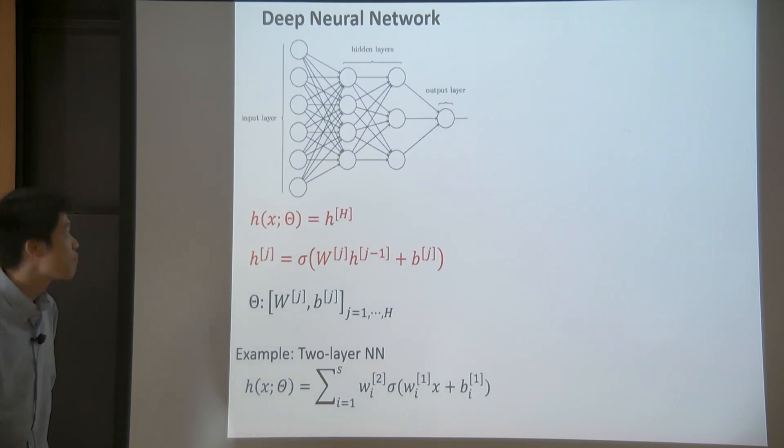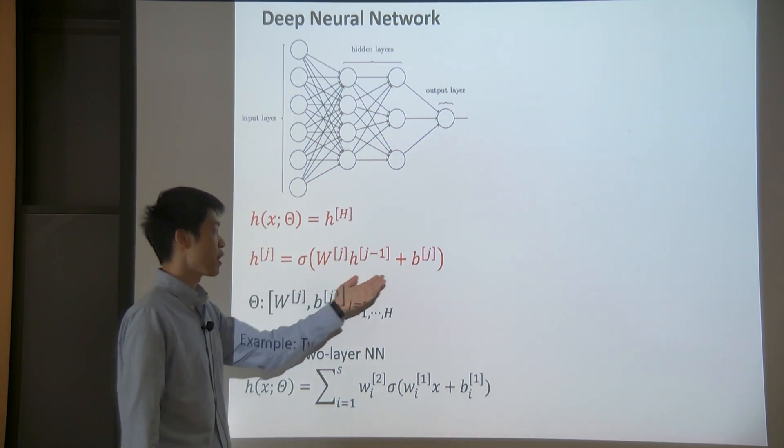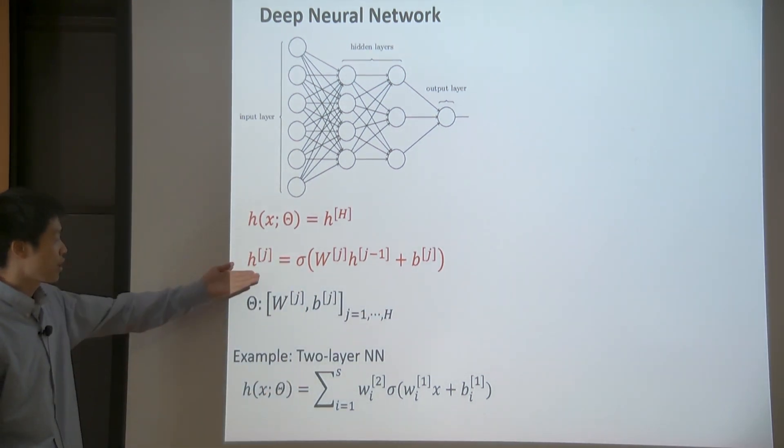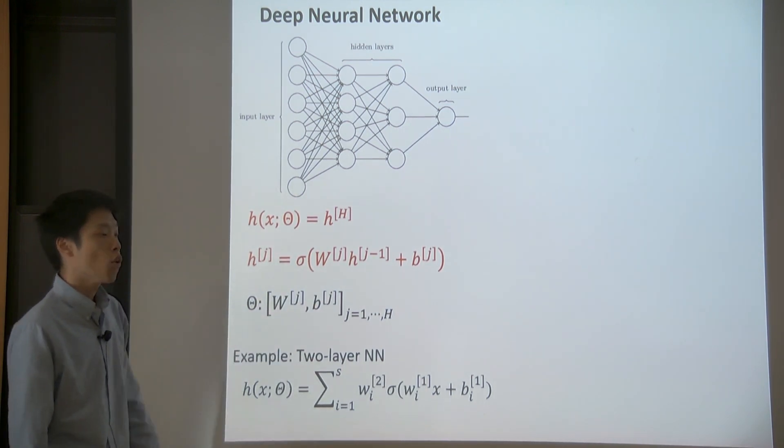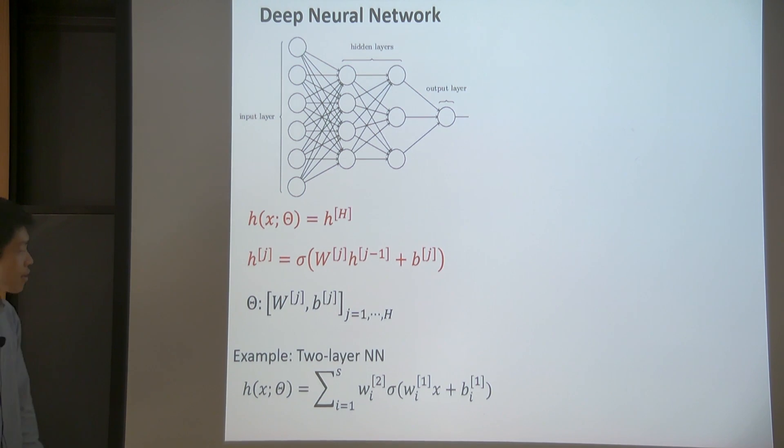So before we go into details, let me first talk about some basics of the deep neural network. Essentially deep neural network is a complicated model of many parameters. It can be used to model or fit any input-output relations. So it has this layered structure. For each of these previous layers, you go through a linear transform plus a bias and go through a static nonlinear transform. You get something on that next layer. So its parameter space is a collection of all these weights distributed over different layers. A simple example is a two-layer neural network. Why? We always consider it because it has universal approximation ability, meaning that as its width S goes to infinity, it can approximate any continuous function to any desired accuracy.